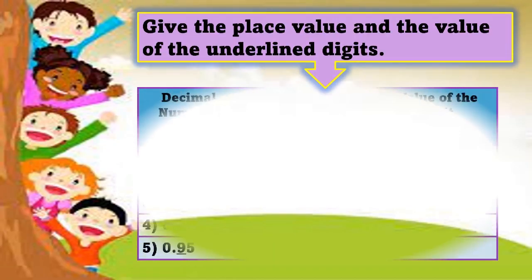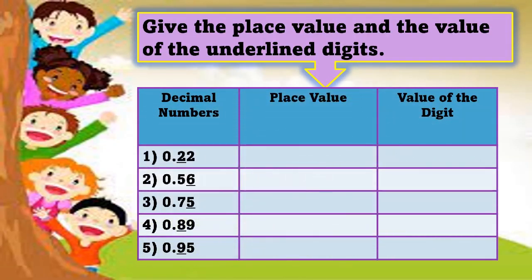Give the place value and the value of the underlined digits. These are the decimal numbers. Number 1: 0.22. The underlined number is 2. What is the place value of 2? Very good. It's tenths. How about the value of the digit? That's correct: 0.2.